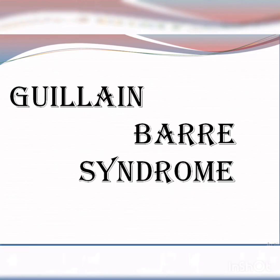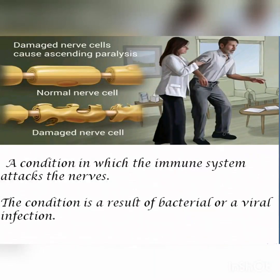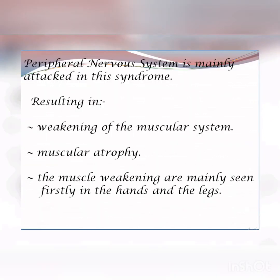In this video we will be studying about Guillain-Barré syndrome. Guillain-Barré syndrome is a condition in which the immune system of a person attacks its own nerves. The condition can be because of a viral or bacterial infection. The part of the nervous system mainly attacked is the peripheral nervous system, which results in weakening of the muscular system. Muscle weakening is usually started from the hands as well as the legs.